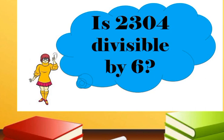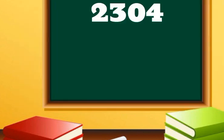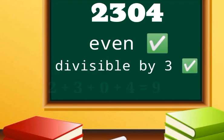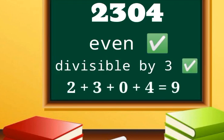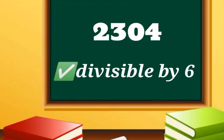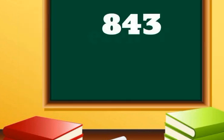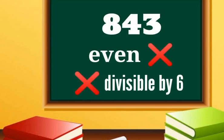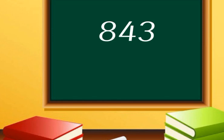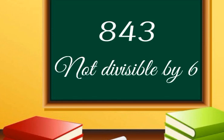Is 2304 divisible by 6? Let's see if this number meets the two conditions. It is an even number, and it is divisible by 3 since 2 plus 3 plus 0 plus 4 equals 9. Then we can say that 2304 is divisible by 6. Now, is 843 divisible by 6? 843 is not an even number, so there is no need to check if it is divisible by 3 since it does not meet the first condition. So we can say that 843 is not divisible by 6.